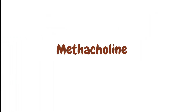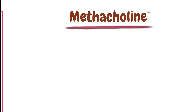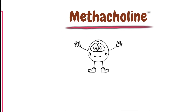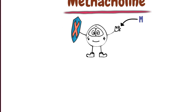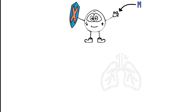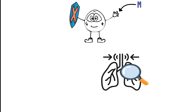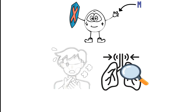The next drug is methacholine. Methacholine is also resistant to hydrolysis by the acetylcholinesterase enzyme, and it has a high affinity for the muscarinic receptor in contrast to nicotinic receptors. Methacholine can be used for the diagnosis of bronchial hyperactivity or asthma.